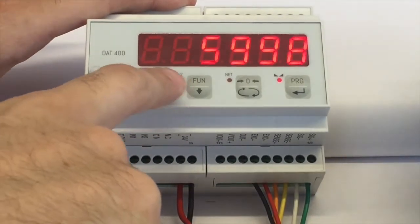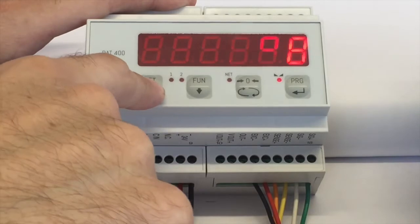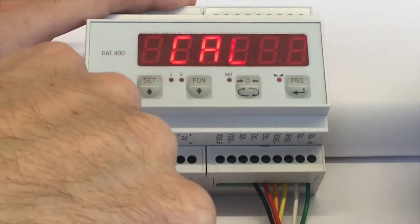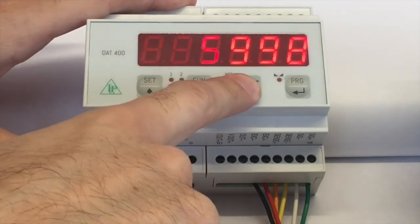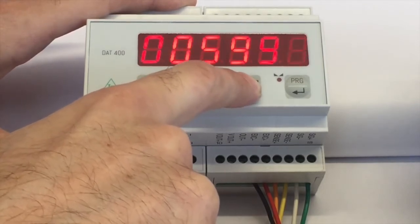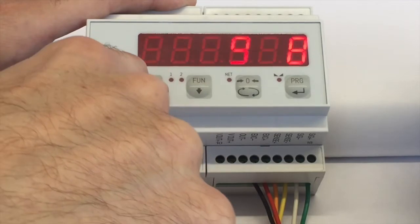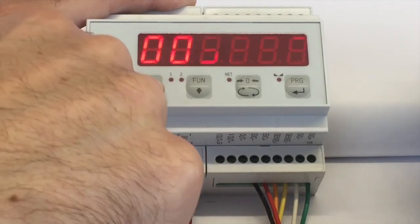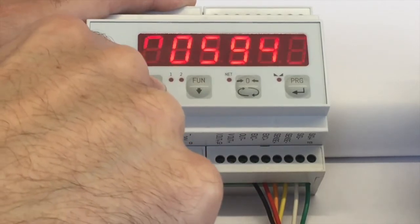To correct the value, press SET. Move with 0 on the digit you want to modify and set the new value with SET and FUN.